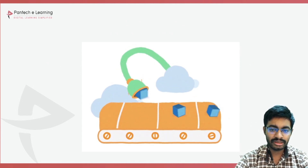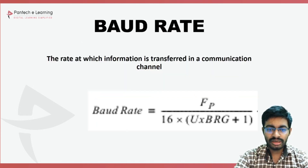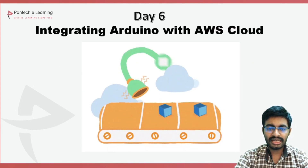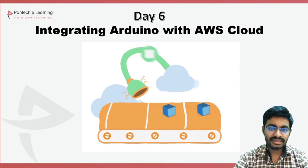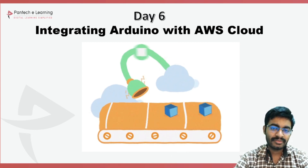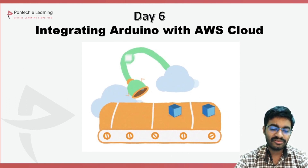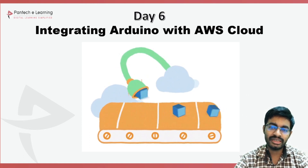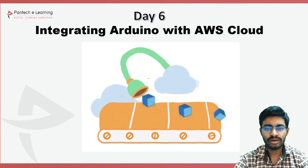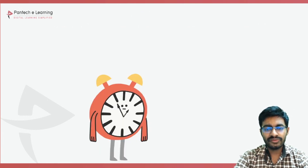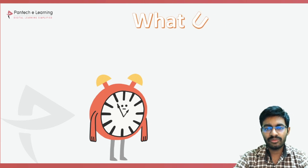Now let us get into the AWS cloud. AWS is commonly known as Amazon Web Service. With this cloud, we can watch movies, monitor anything, store any kind of data, implement machine learning, implement augmented reality and virtual reality. These kinds of different applications are possible with the help of AWS.